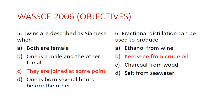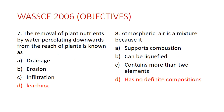Question seven: the removal of plant nutrients by water percolating downwards out of the reach of plants is known as A) drainage, B) erosion, C) infiltration, D) leaching. The answer is leaching — a process in which plant nutrients move deep down the soil as a result of rain, getting out of the reach of plant roots.